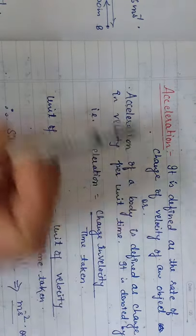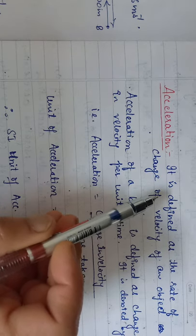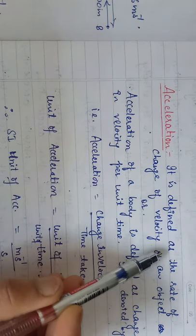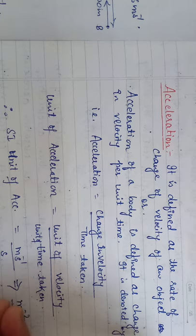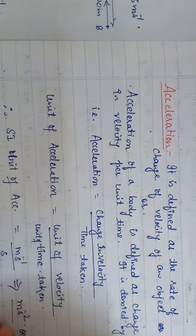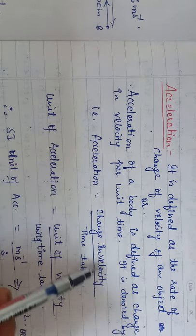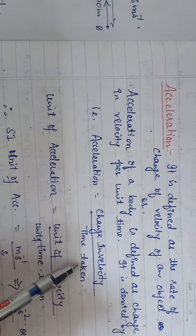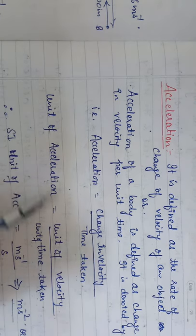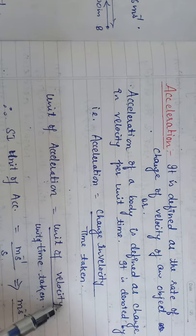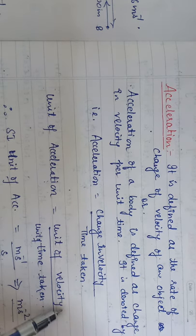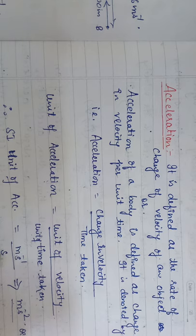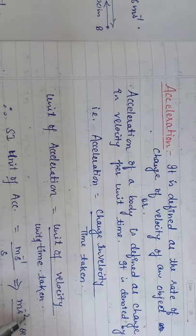In our previous lecture we studied about acceleration — it is the rate of change of velocity of an object, or we can define it as change in velocity per unit time. It is denoted by small 'a', and acceleration equals change in velocity upon time taken. The SI unit of acceleration equals the unit of velocity upon unit of time, which is meter per second upon second.